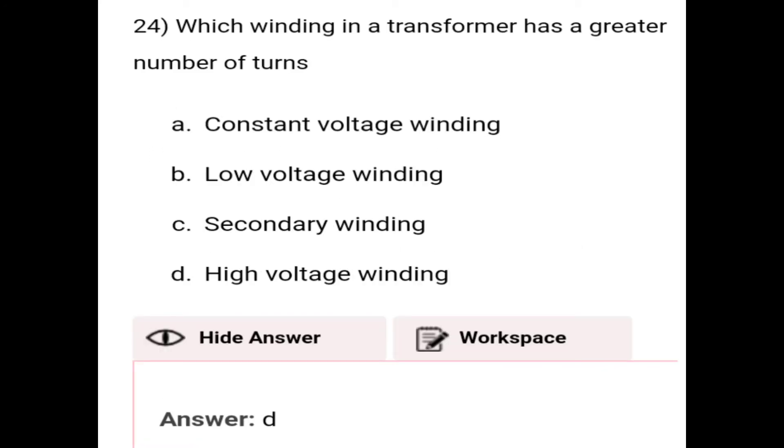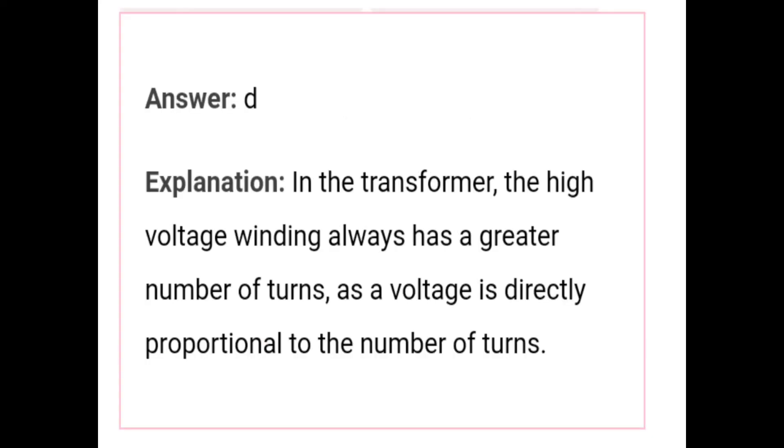Which winding in a transformer has a greater number of turns? The correct answer is option D, that is the high voltage winding. Explanation: In the transformer, the high voltage winding always has a greater number of turns as the voltage is directly proportional to the number of turns.